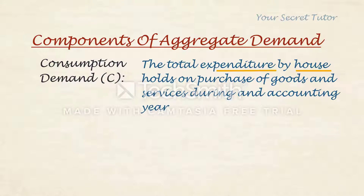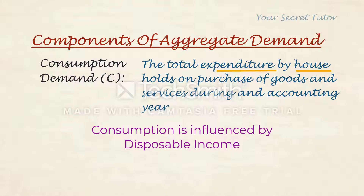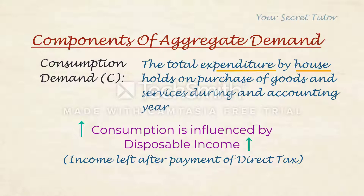The first component is consumption demand — this is the expenditure incurred by households. Consumption demand belongs to the household sector. Consumption is influenced by disposable income. When disposable income increases, consumption increases. Disposable income is income left after paying direct taxes. Disposable income is then divided between consumption and savings.